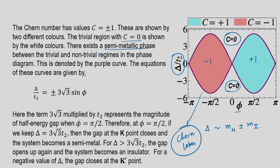That boundary is where the gap closes — a gap-closing transition between the topological and trivial phases, called the semimetallic phase. There is a point where the phase diagram shrinks to zero. The equation of the boundary curve has a sin(phi) dependence, with a coefficient of 3√3·t2, representing the magnitude of the half energy gap at phi equal to pi/2.